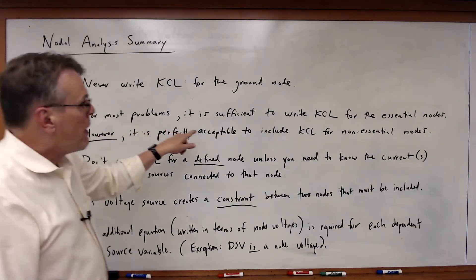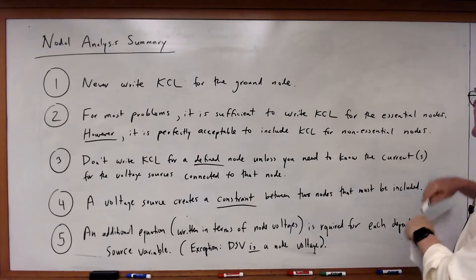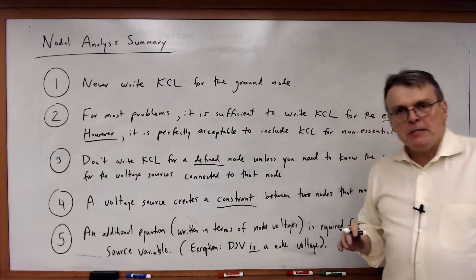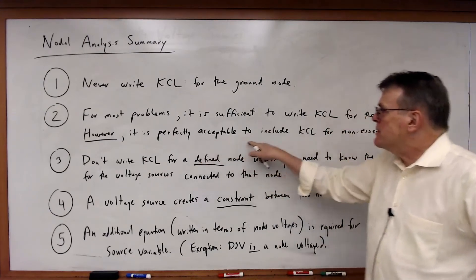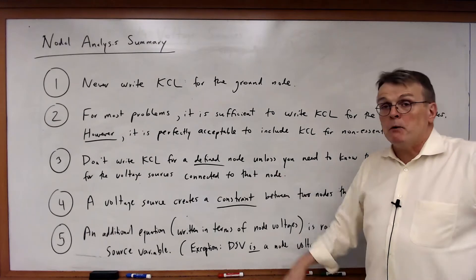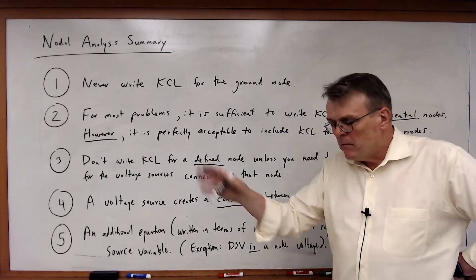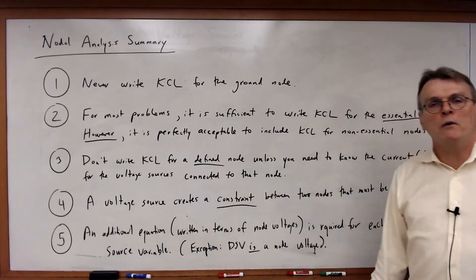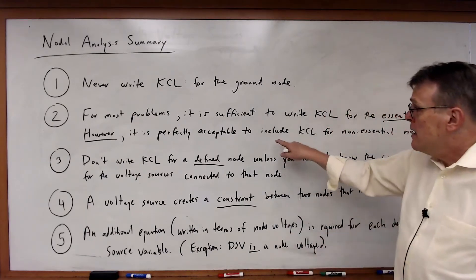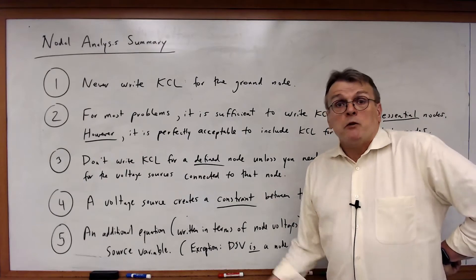Second, for most problems it is sufficient to write KCL for the essential nodes — in other words, the nodes with three or more branches. But I want to emphasize, it is perfectly acceptable to also include KCL for the non-essential nodes too. If you are not certain whether or not you need a non-essential node, include the equation. It's not going to hurt. In some cases, the voltage at a non-essential node may be what the problem asks for, so you have to include it.